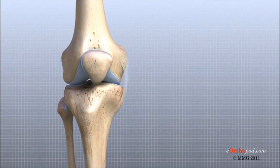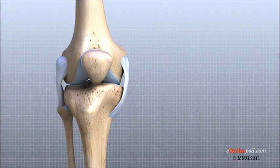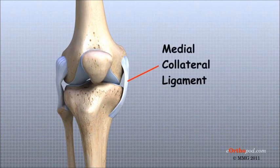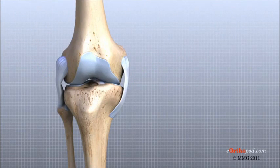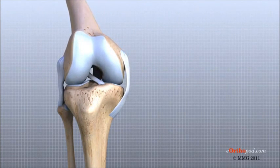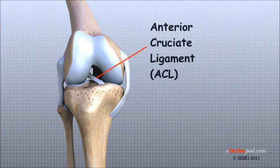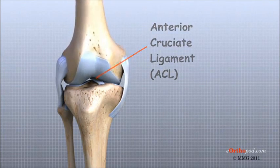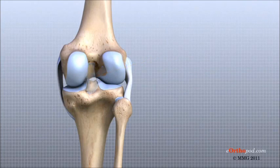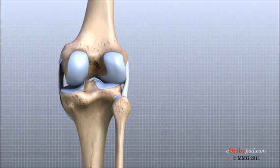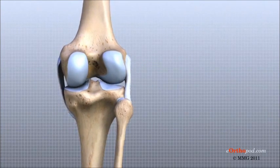Ligaments are tough bands of tissue that connect the ends of bones together. Two important ligaments are found on either side of the knee joint: the medial collateral ligament, or MCL, and the lateral collateral ligament, or LCL. Inside the knee joint, two other important ligaments stretch between the femur and the tibia: the anterior cruciate ligament, or ACL, in front, and the posterior cruciate ligament, or PCL, in the back.